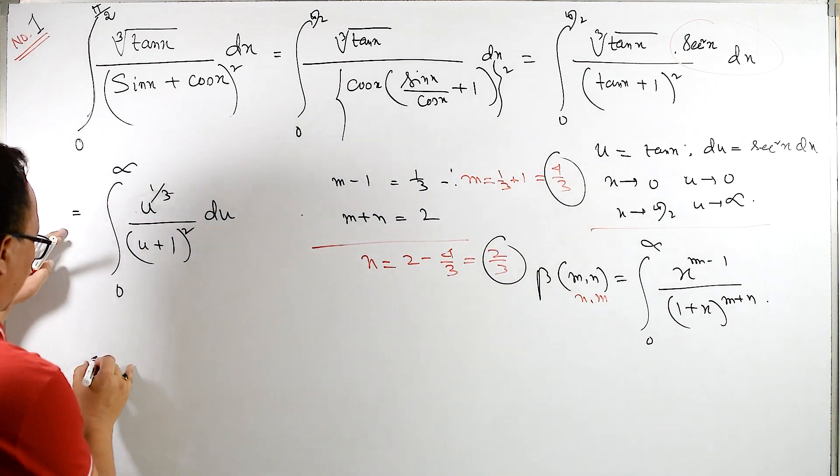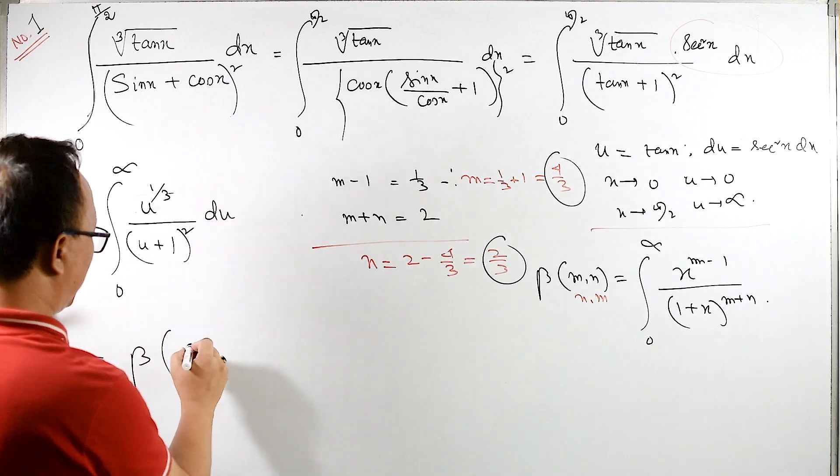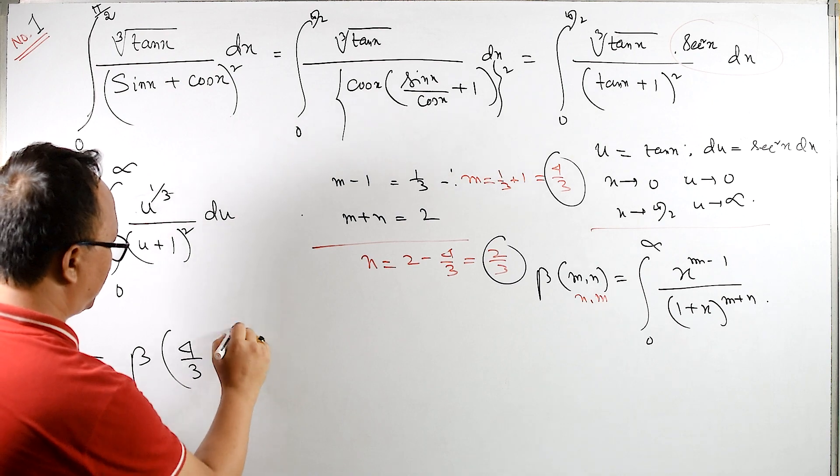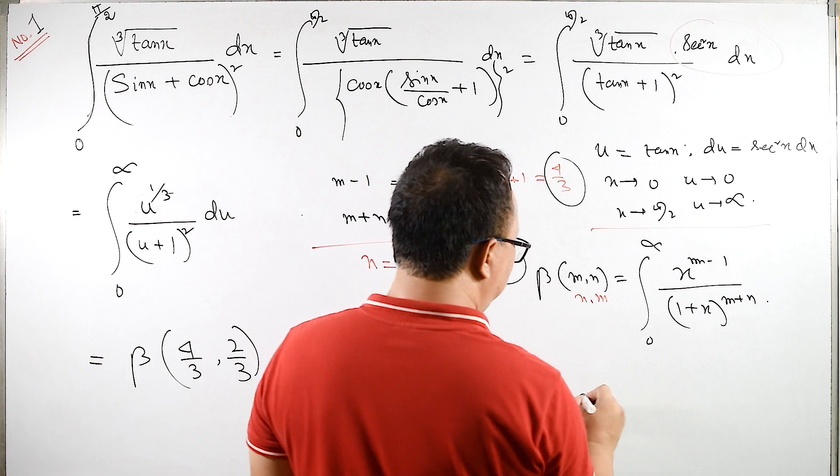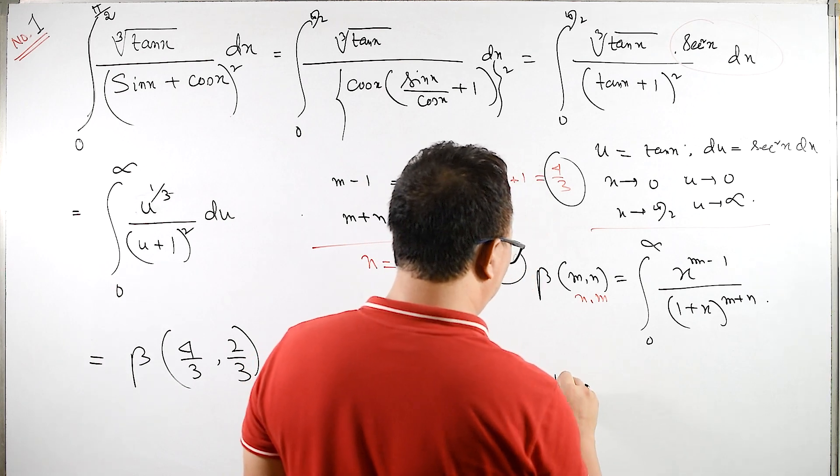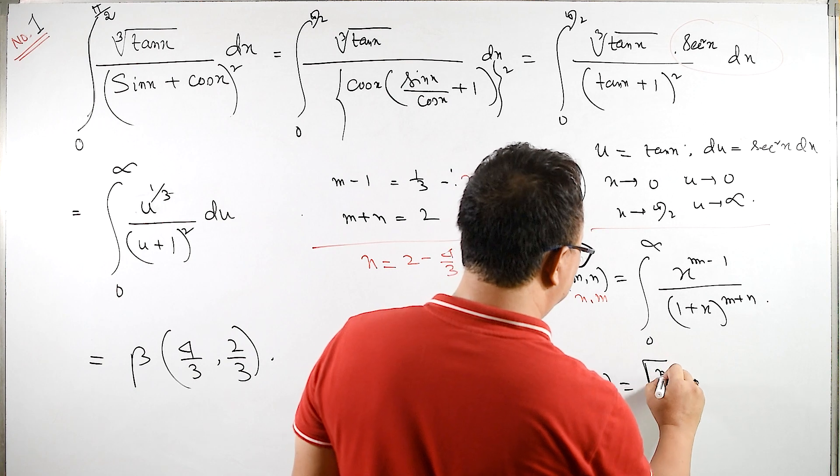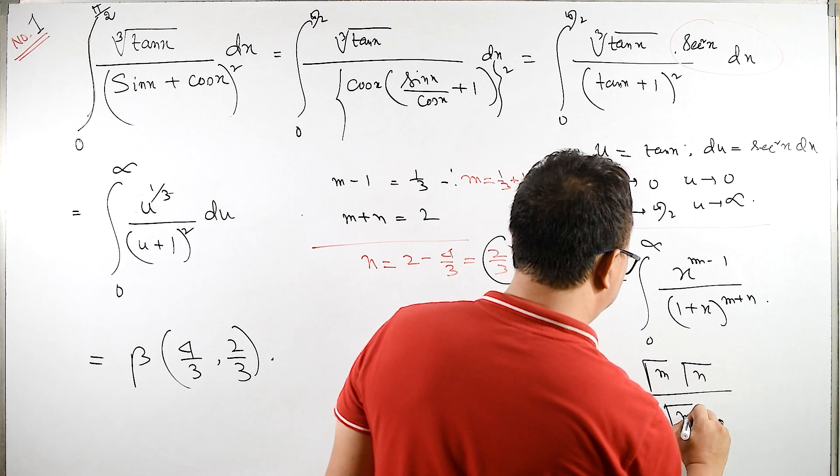Therefore, this integral is become beta of m is what? 4 by 3, and then 2 by 3. We need to find this value. What is beta of m, n in terms of gamma? Beta of m, n in terms of gamma is same as gamma of m into gamma of n upon gamma of m plus n.